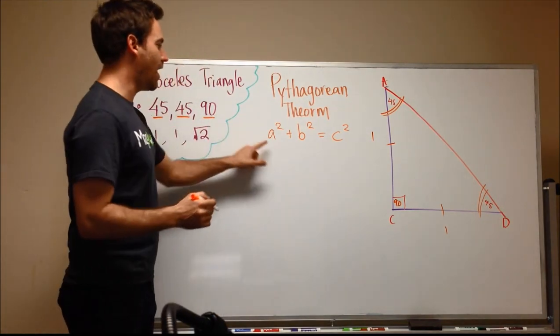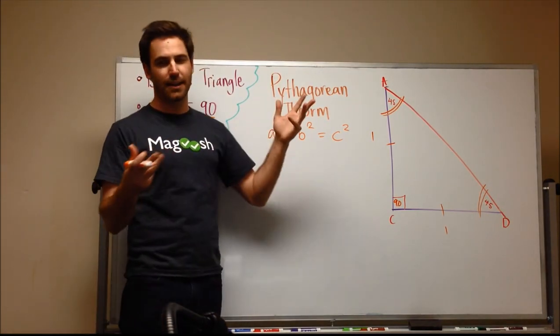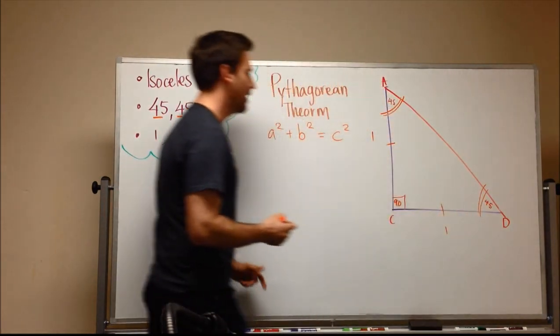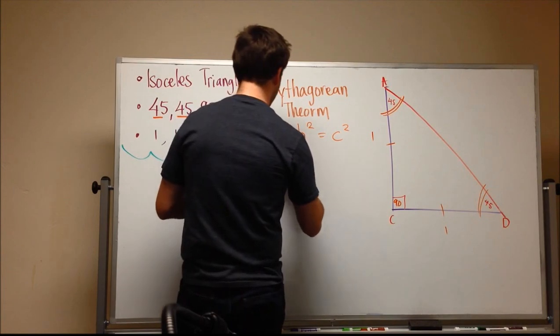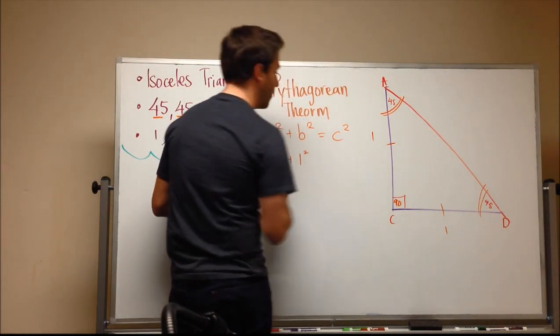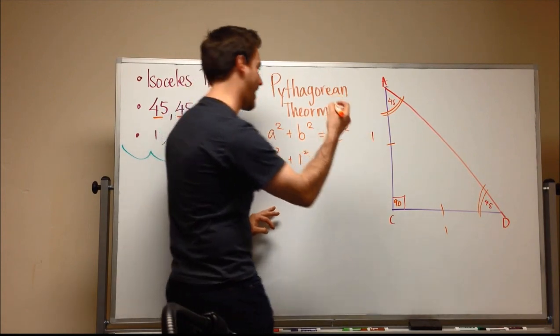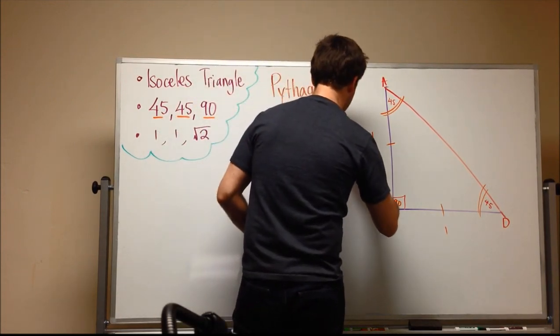Very well done. So the A and the B, that is our side. And C is going to be the hypotenuse, which is this. And so we're just going to plug in what we have. We have one squared plus one squared equals. And here I'll just put the side AD, AD squared.